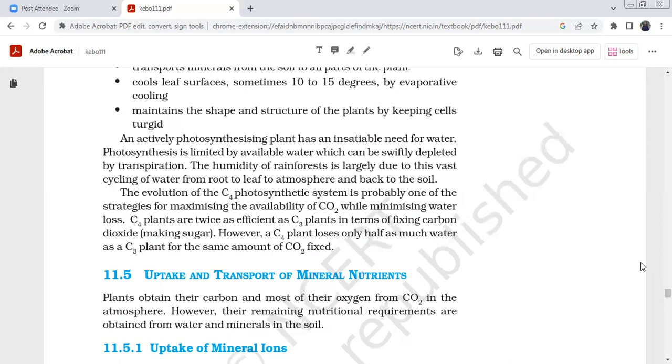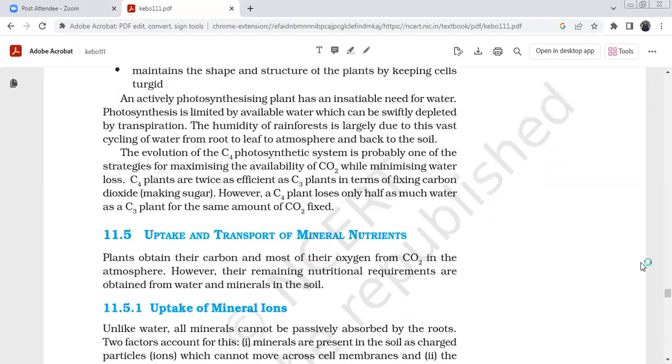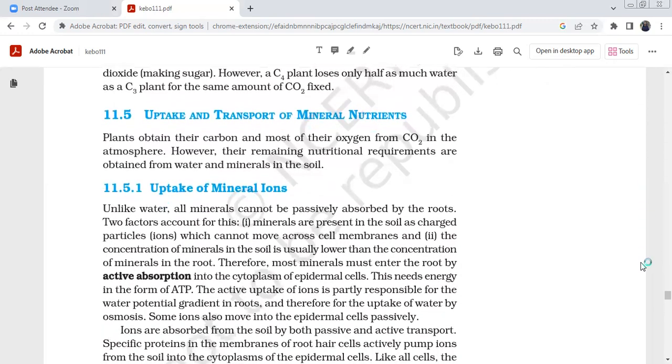The evolution of the C4 photosynthetic system is probably one of the strategies for maximizing the availability of CO2 while minimizing water loss. C4 plants are twice as effective as C3 plants in terms of fixing carbon dioxide. C4 plants lose only half as much water as C3 plants for the same amount of carbon dioxide fixation.